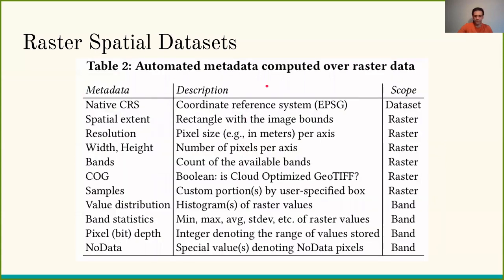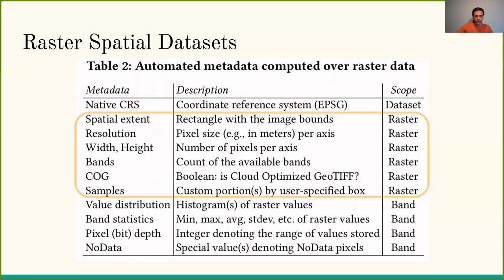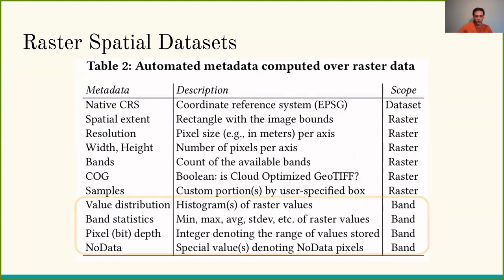In a similar manner, for raster datasets we have the native CRS which describes the raster dataset as a whole. We have raster-specific metadata such as the resolution and number of bands. Since rasters are organized in one or more bands, we also have band-related metadata, including value distribution, the histogram of raster values, band statistics, and other things.